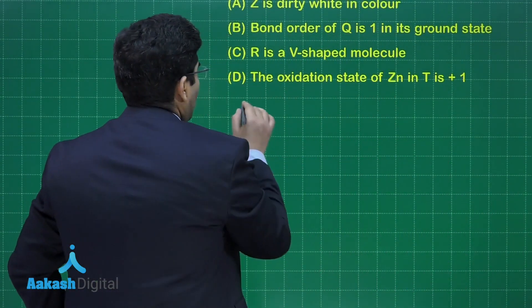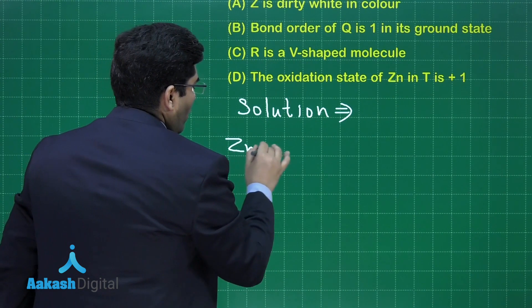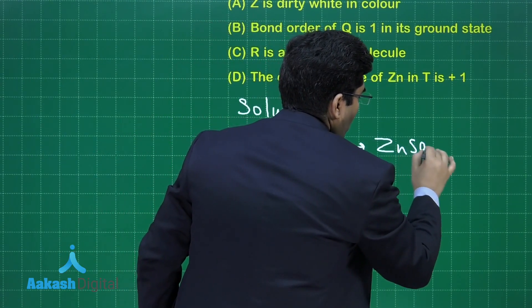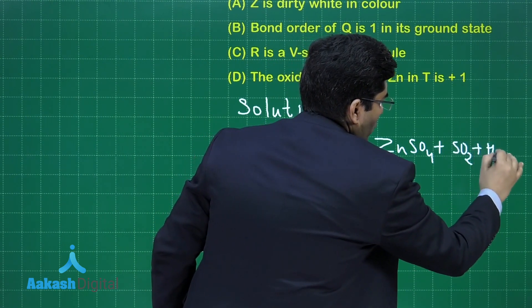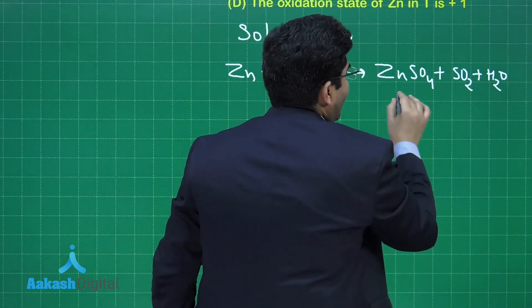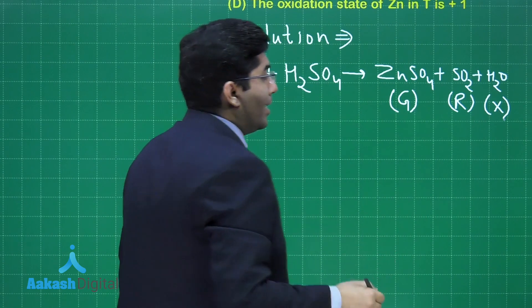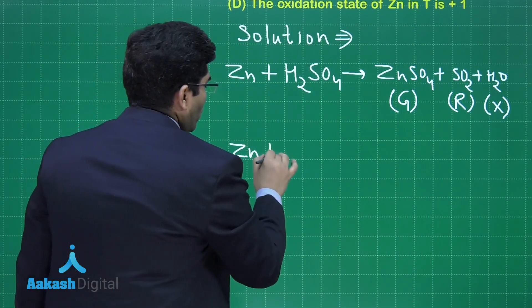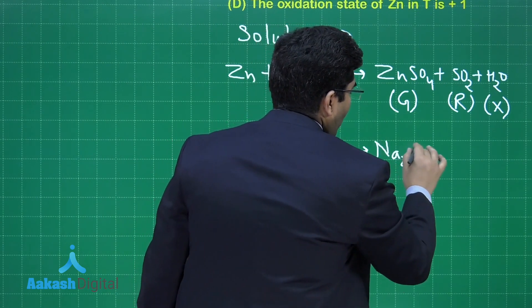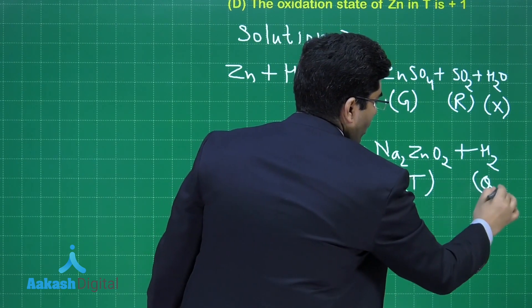Let's write the equations. In the first reaction, zinc reacts with concentrated H2SO4 to give ZnSO4 + SO2 + H2O. So G is ZnSO4, R is SO2, and X is H2O. The next reaction is zinc with NaOH, which gives sodium zincate (Na2ZnO2) plus hydrogen gas. So T is Na2ZnO2 and Q is H2.